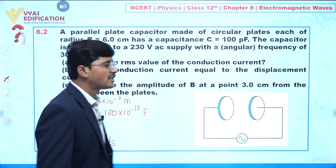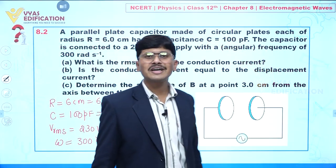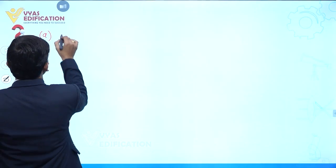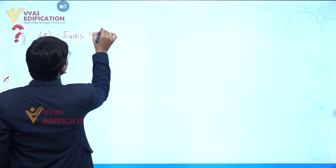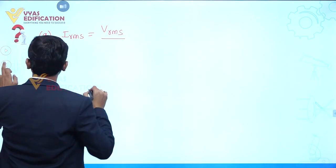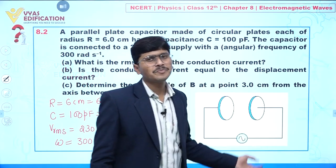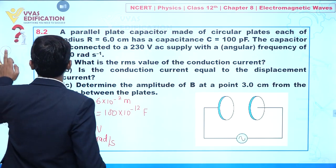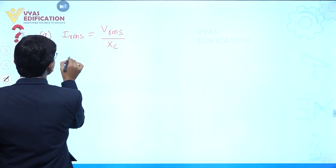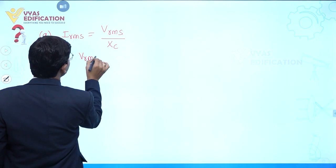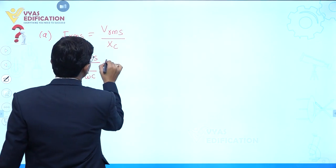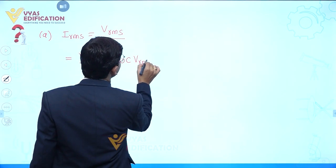Our first objective in this question is to calculate the RMS value of conduction current. So, I_RMS = V_RMS divided by the capacitive reactance. For a capacitor, we always write capacitive reactance indicated by X_C. So this is equal to V_RMS divided by 1/(ωC), which gives us ω × C × V_RMS.